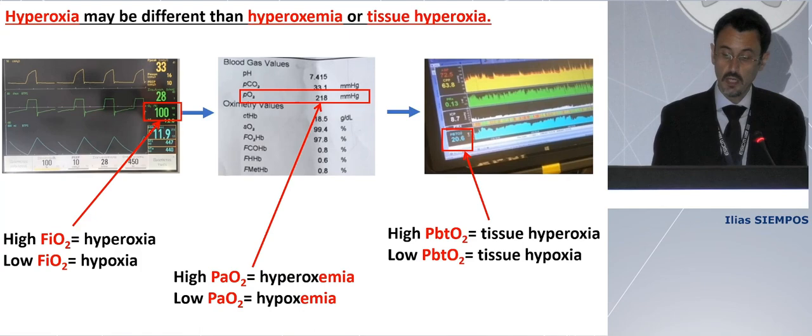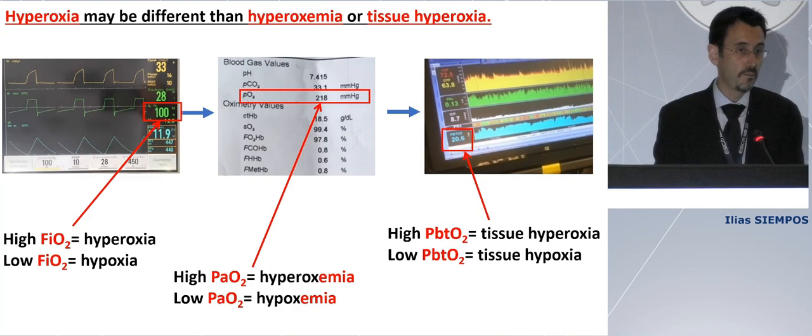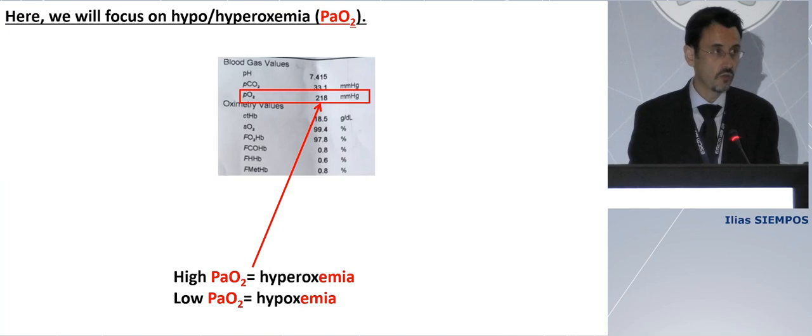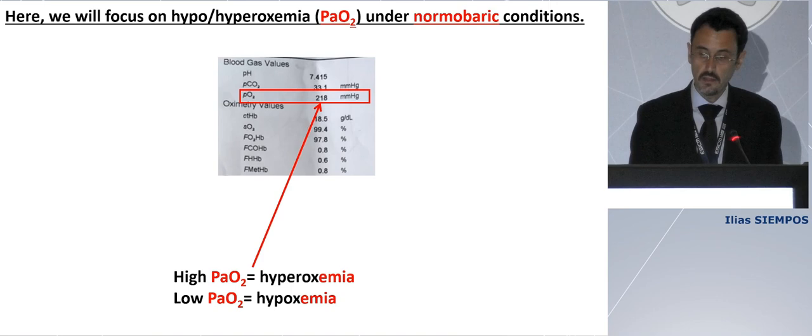This is different from hyperoxia. The word 'emia' means blood in Greek. So when we are talking about hyper- or hypoxemia, we are referring to PaO2 — pressure of arterial oxygen. And finally, we have tissue hyperoxia and hypoxia, for which we need the brain tissue oxygen tension. In this talk, we will focus on hypo- and hyperoxemia, PaO2, under normobaric conditions.